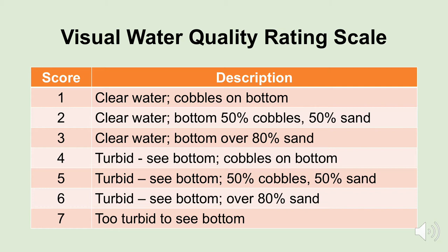So we came up with a visual water quality rating scale. We got the best water quality visual rating when we had clear water and cobbles on the bottom of the stream. As the percentage of cobbles decreased, the visual water quality score changed: a score of 2 for 50% cobbles and 50% sand; a score of 3 when the bottom was covered with 80% or more sand. A score of 4 for turbid water where we could see the bottom and there were cobbles; a score of 5 for turbid water with a mixture of 50% cobbles and 50% sand; a score of 6 for turbid water with over 80% sand; and a score of 7 if the water was too turbid to see the bottom of the stream.